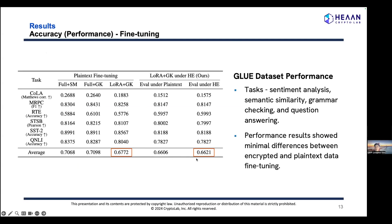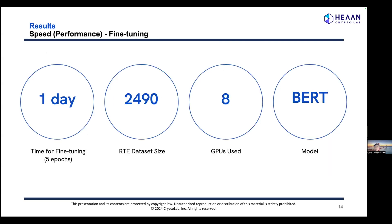These tasks included benchmarks like sentiment analysis, semantic similarity, grammar check, and question answering. The speed for fine-tuning the BERT model was measured using 8 GPUs. The time increases in proportion to the size of the training dataset, with the RTE dataset of size 2,490 taking about 4.8 hours per epoch. Five epochs are considered sufficient for fine-tuning on a simple dataset, meaning we can perform fine-tuning once a day with about 2,500 data samples.